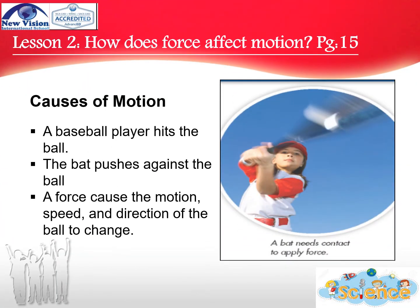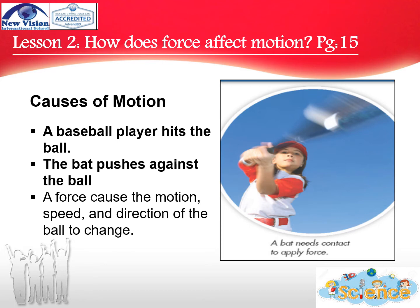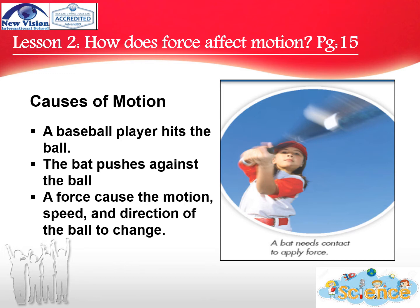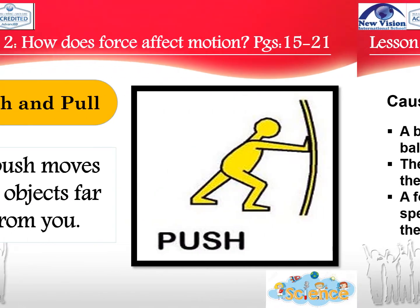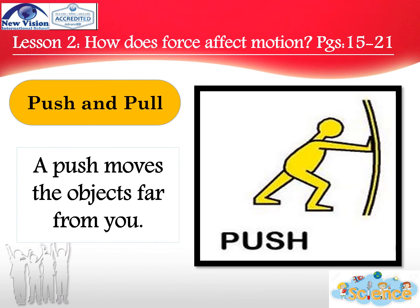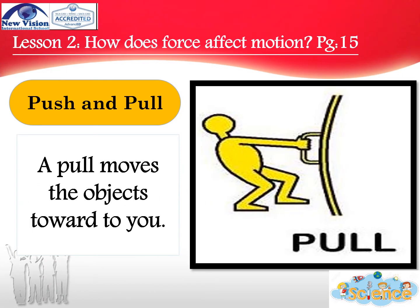Look at this picture. You can see a baseball player hits the ball. The bat pushes against the ball. A force causes the motion, speed, and direction of the ball to change. So, a bat needs contact to apply force. You can see in this picture the man is trying to push the object — a push moves the object far from you. While in this picture, you can see the man is trying to pull the object — a pull moves the object toward you.